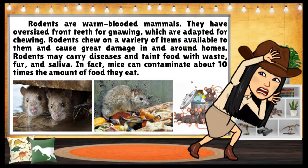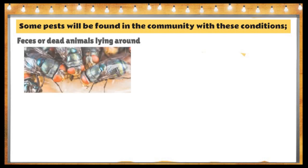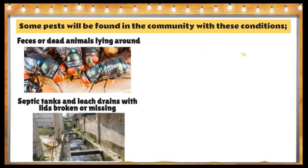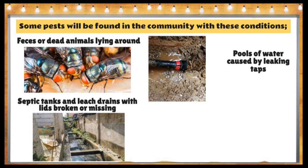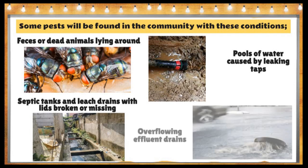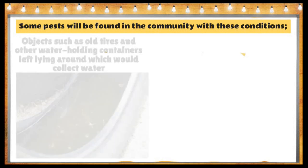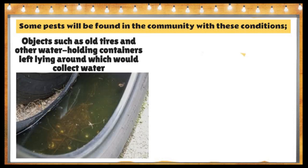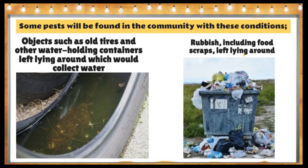In fact, mice can contaminate about 10 times the amount of food they eat. It is likely that pests will be found in a community with conditions such as dead animals lying around, septic tanks and leach drains with lids broken or missing, pools of water caused by leaking taps, overflowing effluent drains, and objects such as old tires and other water-holding containers left lying around.